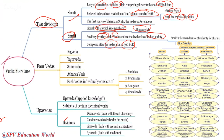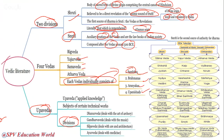Each Veda consists of subdivisions: Samhitas, Brahmanas, Aranyakas, and Upanishads. Upavedas are sub-vedas connected to the main Vedas: Dhanurveda deals with archery; Gandharva Veda deals with music (Upaveda of Samaveda); Shilpa Veda deals with architecture; and Ayurveda deals with medicine — a well-versed and developed society with different knowledge systems.